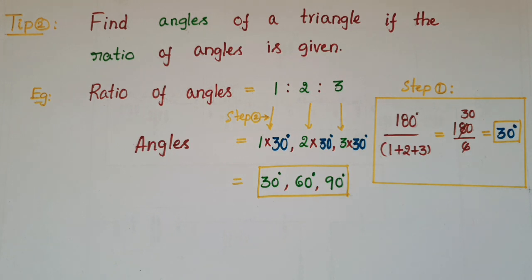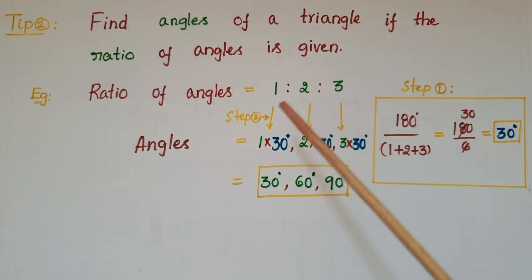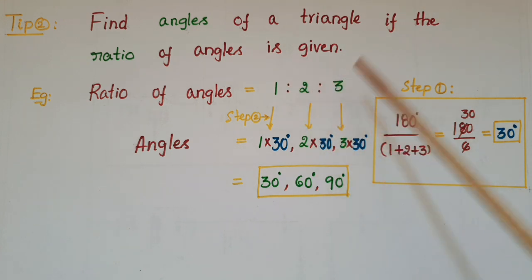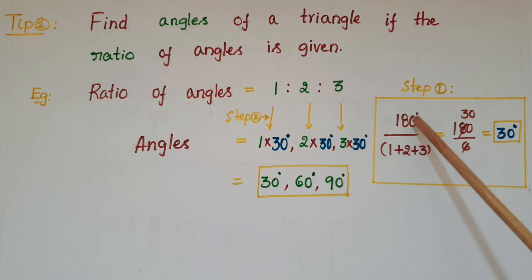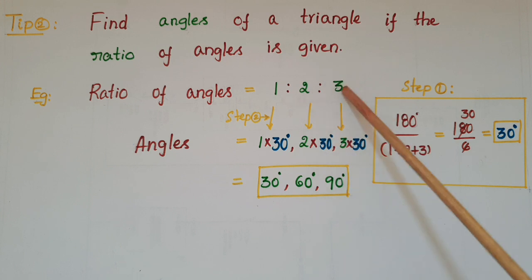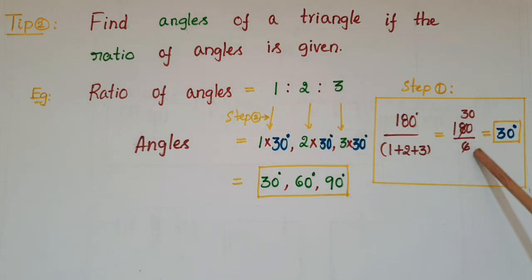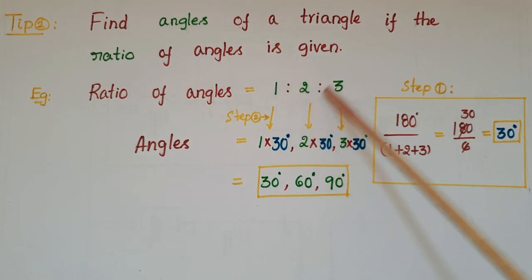Here is another tip: find the angles of a triangle if the ratio of angles is given. For example, the ratio of angles is 1:2:3. First, find this value — 180 degrees divided by the sum of all the numbers: 1 plus 2 plus 3. That equals 180 by 6, which is 30 degrees.